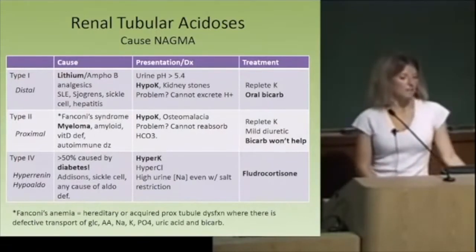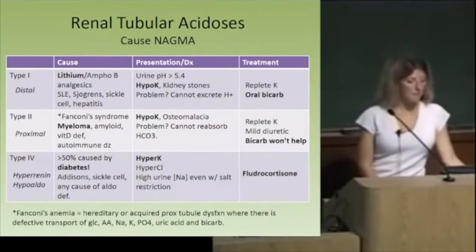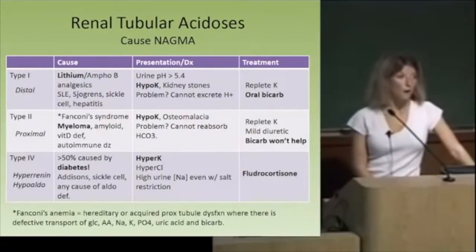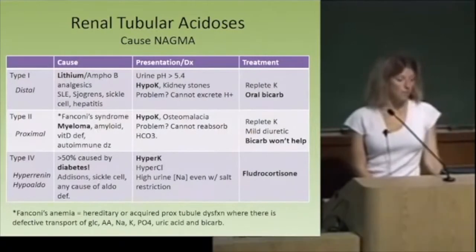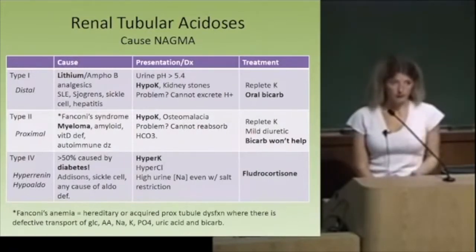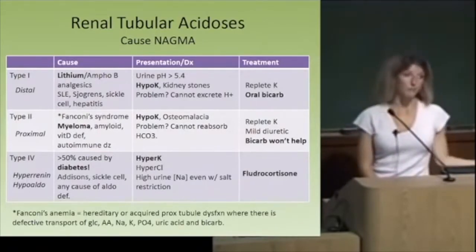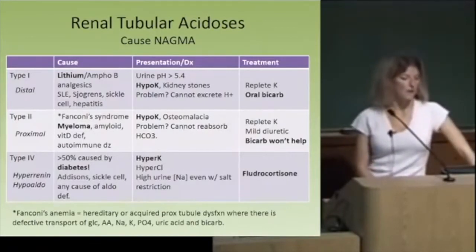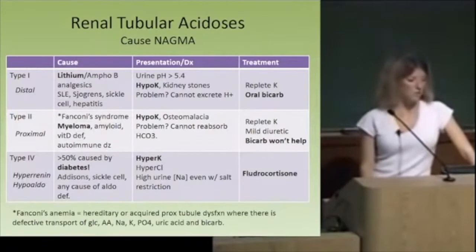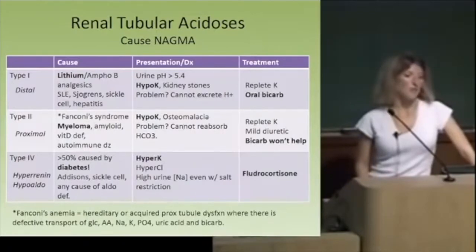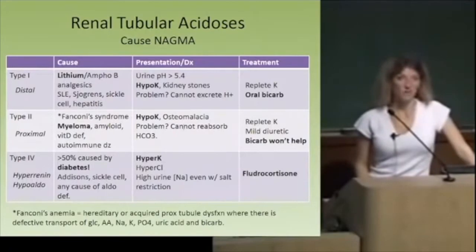Type 4 RTA is hyperreninemic hypoaldosteronism, and the overwhelming majority are caused by diabetes. On presentation, what differentiates it from Type 1 and 2 is that the patient is hyperkalemic, which makes sense with low aldosterone. We treat this by repleting mineralocorticoids — fludrocortisone. To get these questions right: remember the major causes of all three types, what potassium does, how to treat them, and the difference between distal and proximal, and whether the problem involves protons or bicarb.